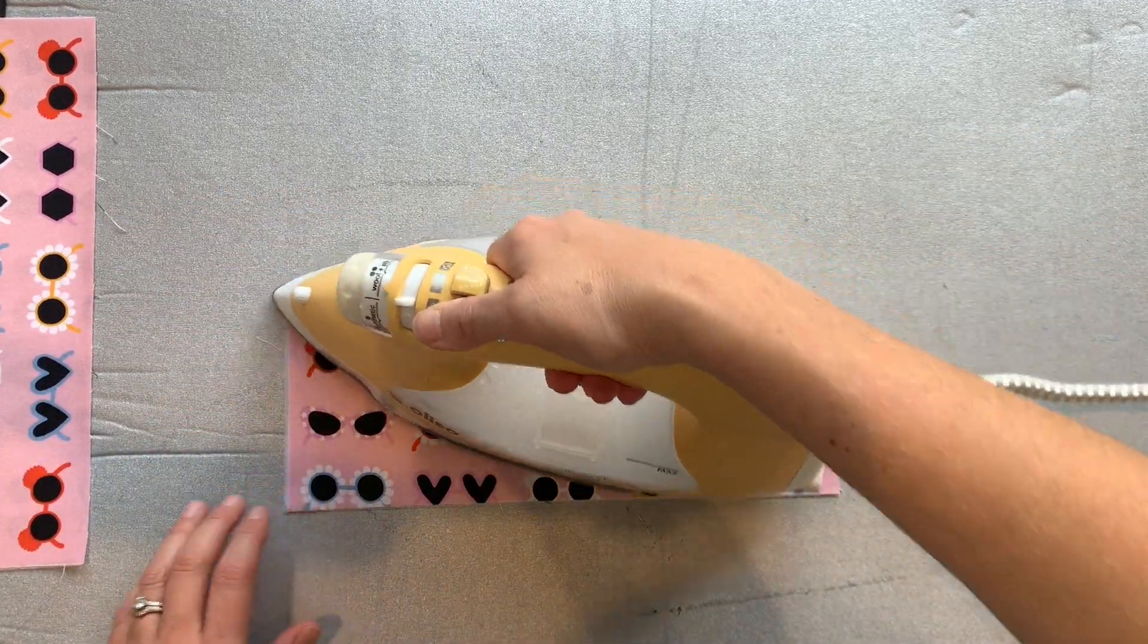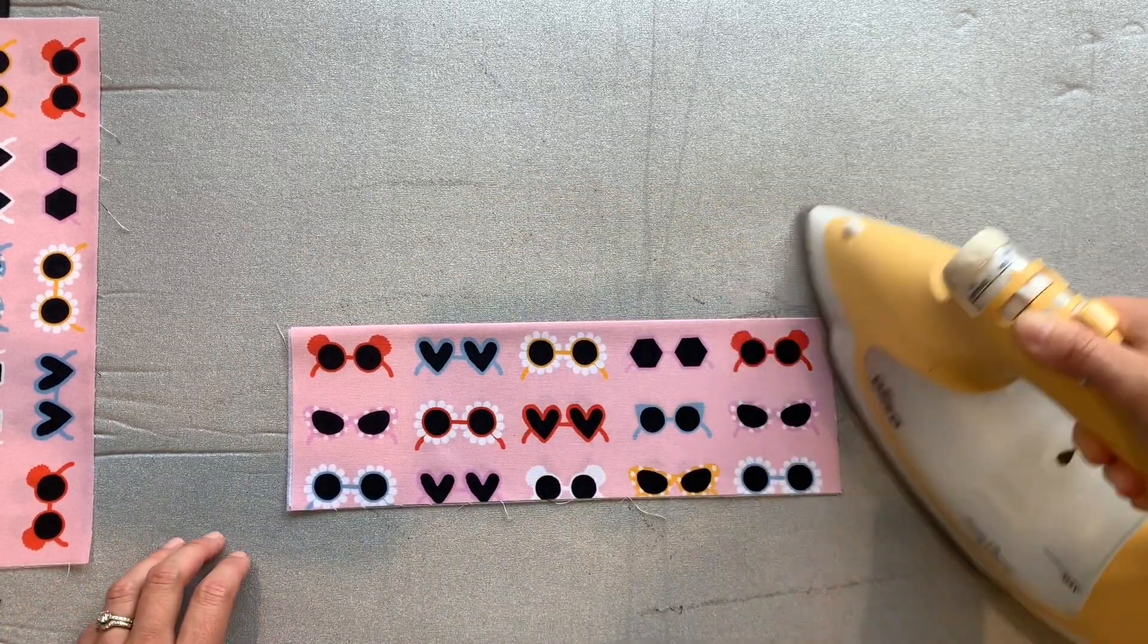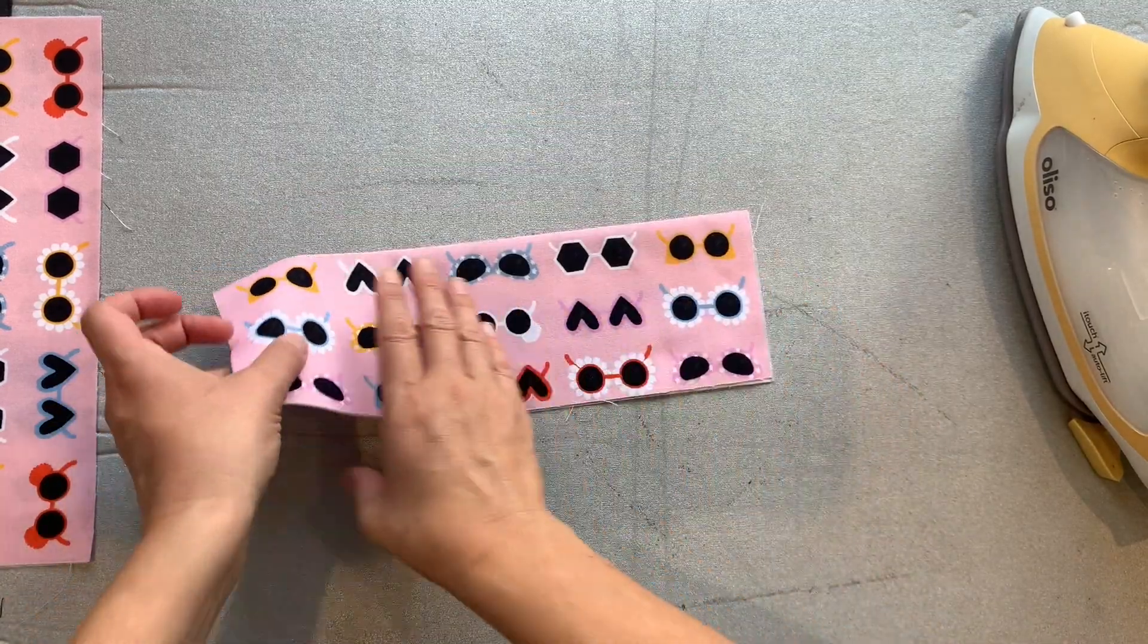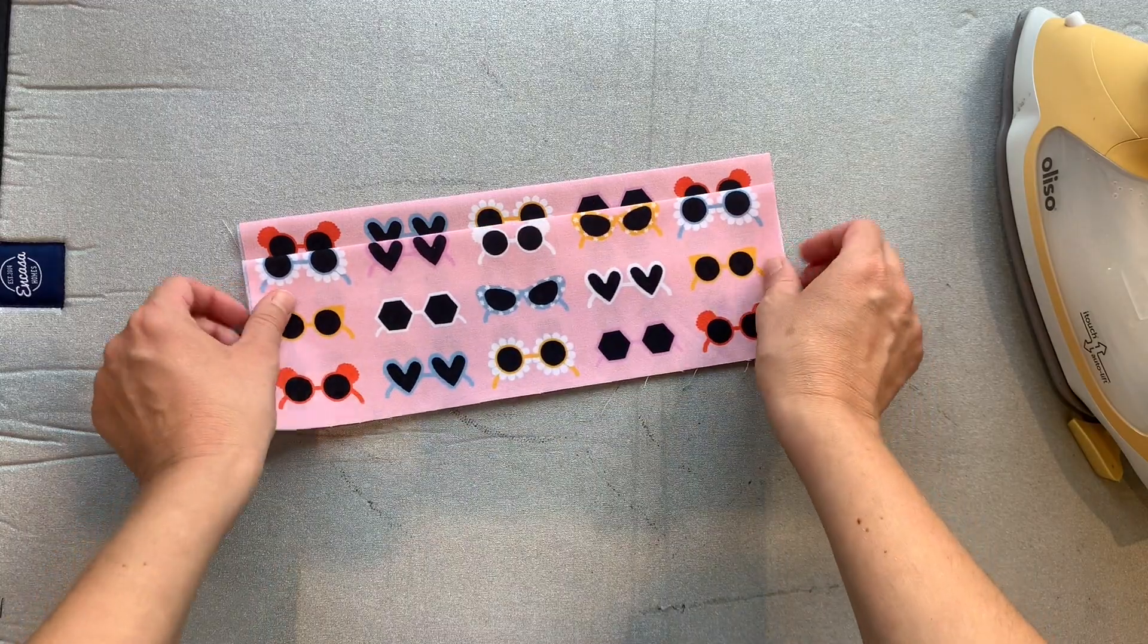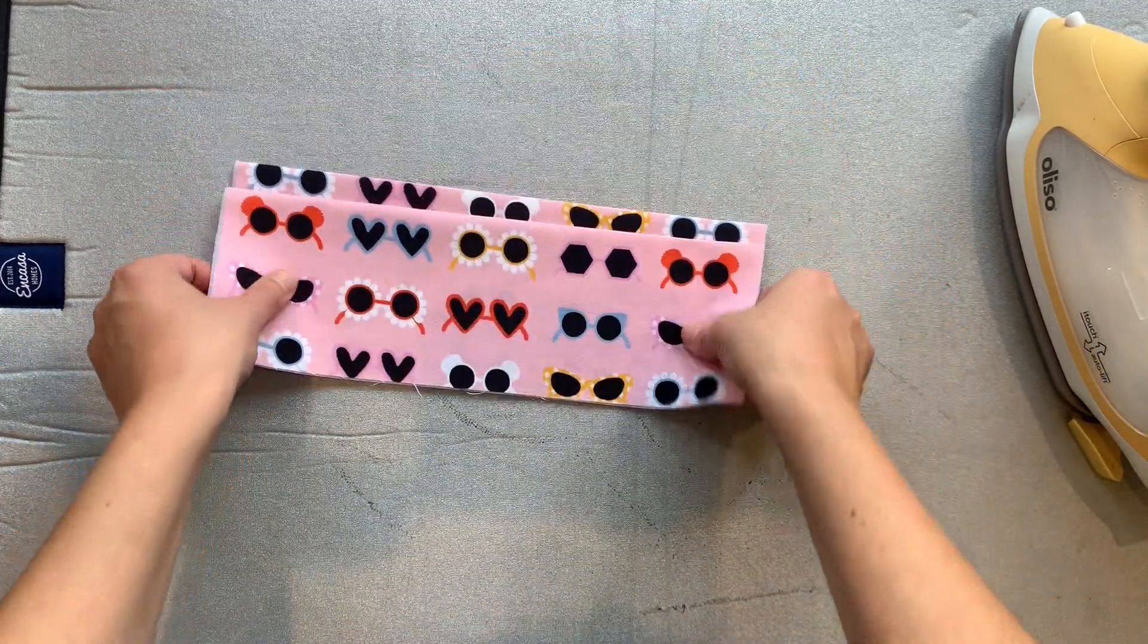You'll notice with this print as well, any print that has a direction because you're folding it in half, one side will look the right way up and one side will be upside down. So it doesn't matter. Obviously we're just going to use the sides that are the right way up. It looks nice like that.